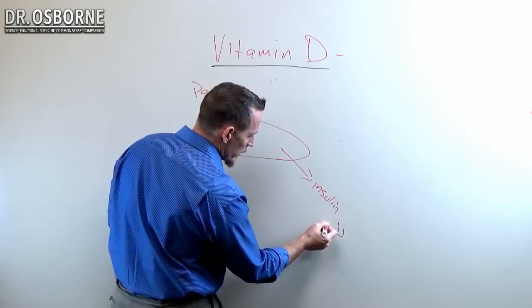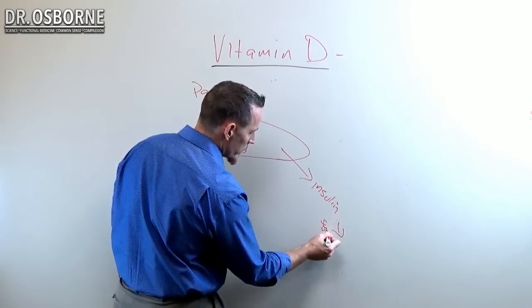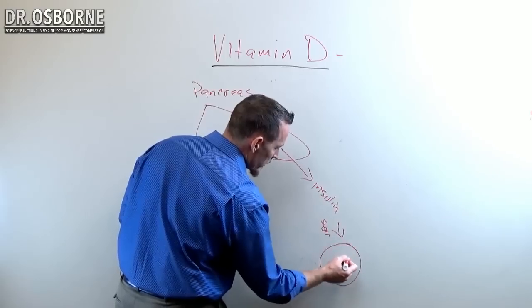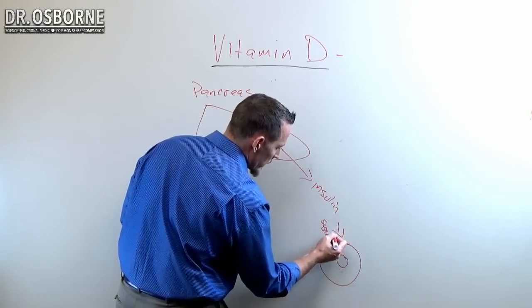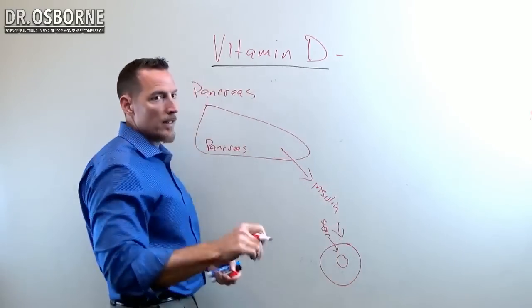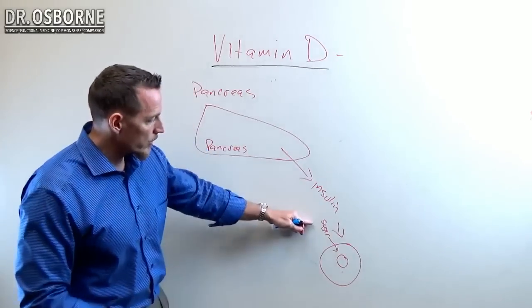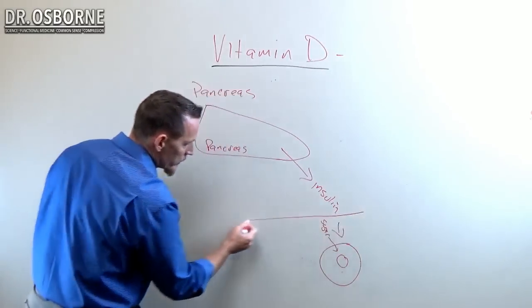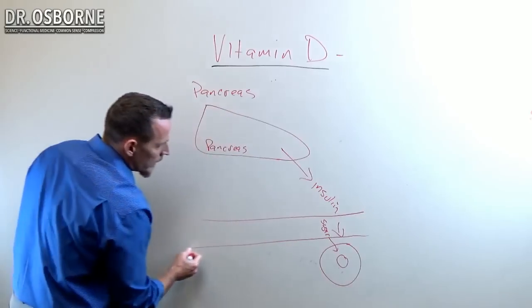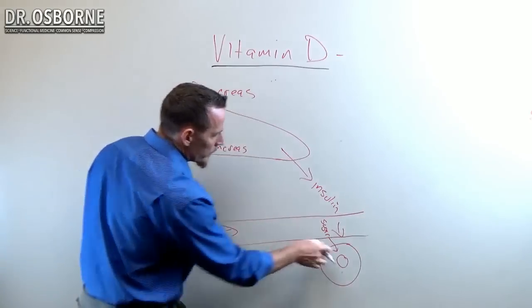The insulin is like a key. It unlocks a door in your cell and allows sugar to get out of your bloodstream. If this is the bloodstream and blood is flowing that way, and this is the cell, then insulin allows that sugar to get out of your blood into your cell.